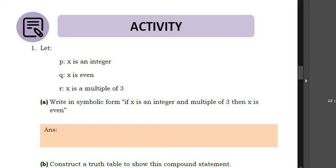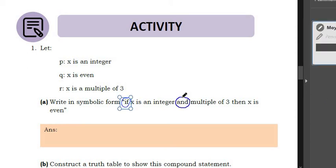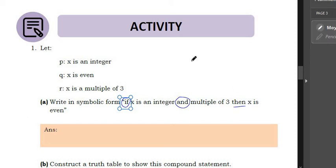We see an if statement and we see an and, so we're going to be using an implication — if-then — which means we use the single arrowhead, not the double implication. Remember, the phrase to the right of the arrowhead is the conclusion: 'then x is even,' which is represented by q. I wrote that one first because that's the easiest part.